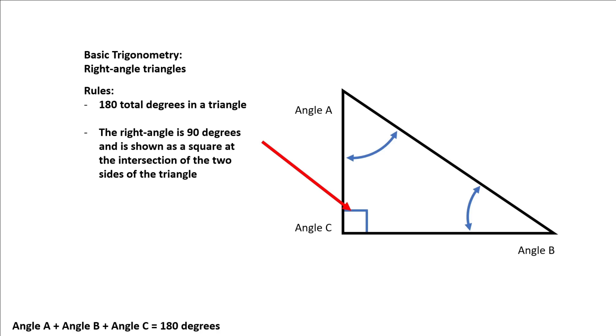The right angle is shown as this symbol identified here, which looks like a square where the two straight sides of the triangle meet.